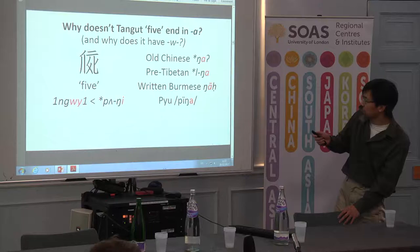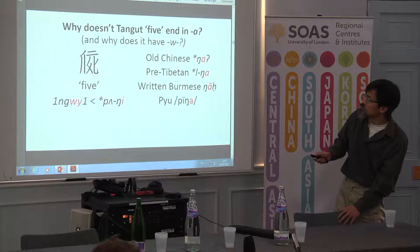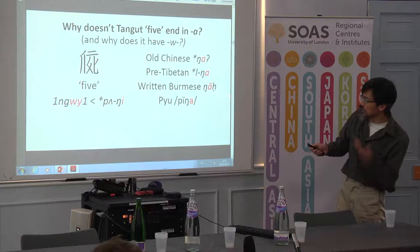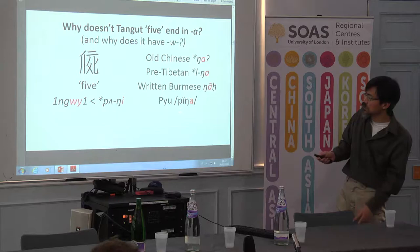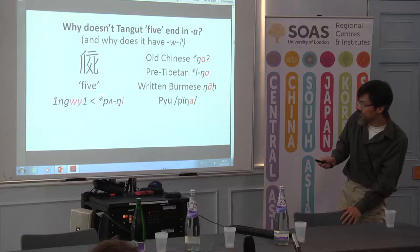Using my system, if I take this back in time, I end up with an Nhi with an E. But throughout Sino-Tibetan, the word for five in the oldest languages universally has A — Old Chinese, Tibetan, Burmese, and Pyu, an extinct Sino-Tibetan language once spoken in Burma. So we have all these votes for A, and Tangut has an E here. Why is Tangut the odd man out?